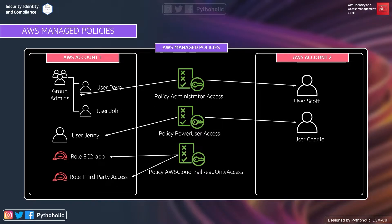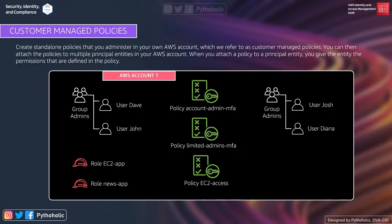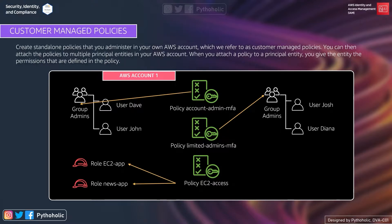Along with managed policies, we also have customer managed policies. Unlike AWS managed policies, with customer managed policies we can create standalone policies that we administer in our own account. AWS managed policies are created and administered by AWS, whereas customer managed policies are created and administered by us for our own AWS account. Here we have three customer managed policies: account-admin-mfa, limited-admins-mfa, and ec2-access — these can be attached to users, groups, and roles in the account.